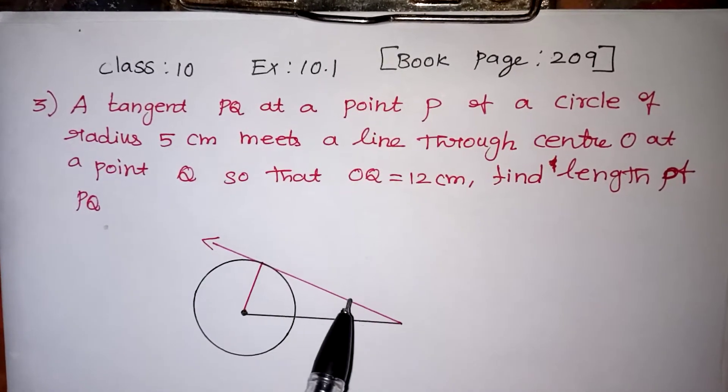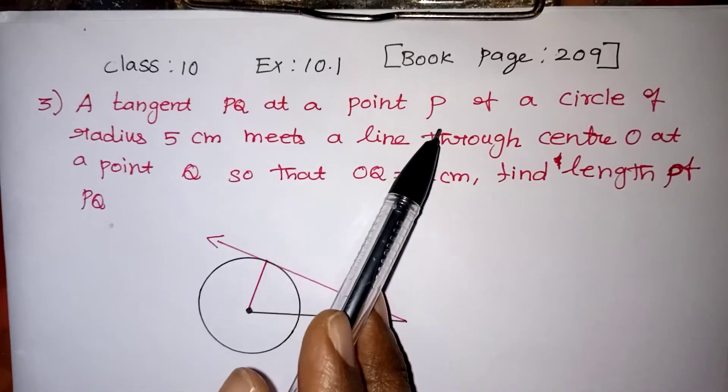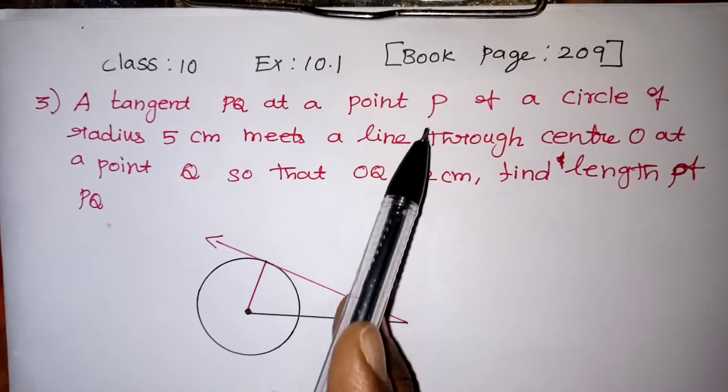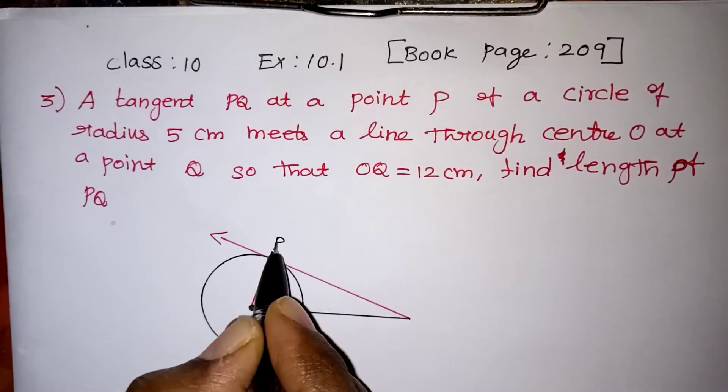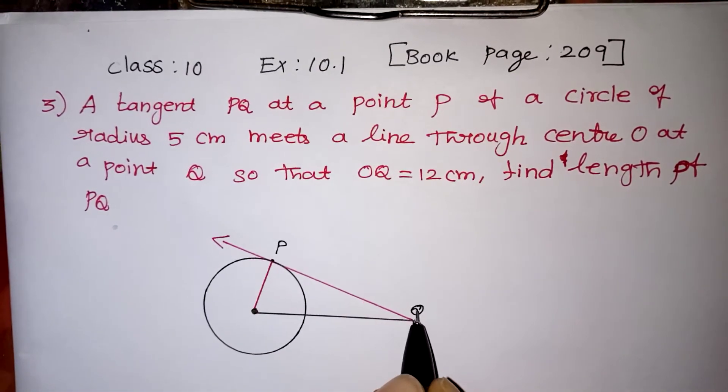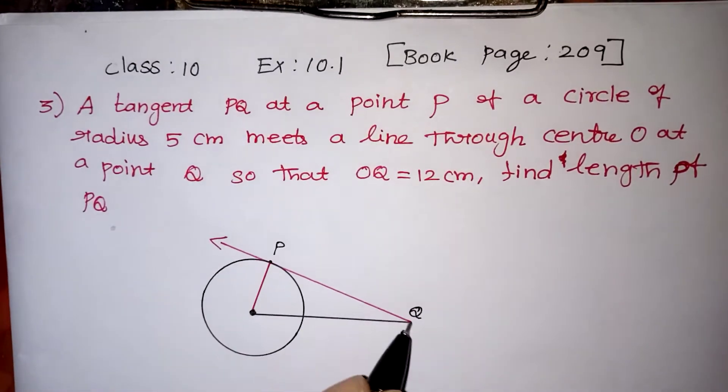The tangent name is PQ at a point P of a circle. So P is a point on the circle. So this point you have to take as P and this point will be Q. Then only we can call PQ a tangent.